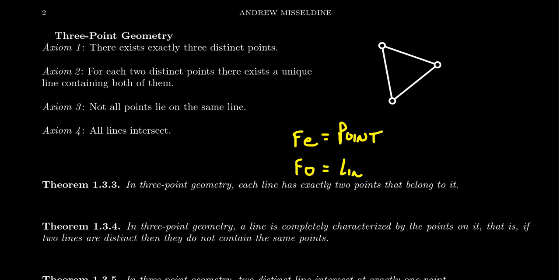There was also this relationship between Fee's and Foe's that we called belonging. So we'd say that a Fee belongs to a Foe. Well, now we're going to call that incidence. So we can say that a point is incident to a line. Make that substitution: Fee's are points, Foe's are lines, belonging is incidence. And then we changed nothing about the theory of Fee and Foe.